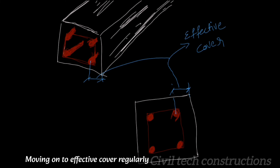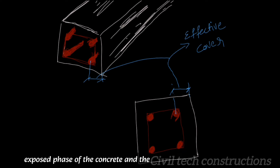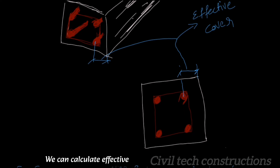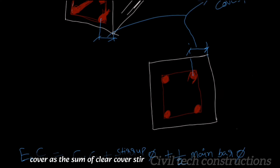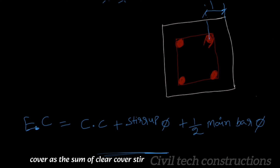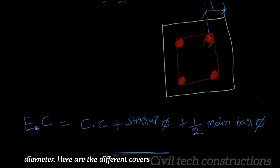Moving on to effective cover, regularly used in designs, it is the distance between the exposed face of the concrete and the centroid of the main reinforcement. We can calculate effective cover as the sum of clear cover, stirrup diameter, and half of the main bar diameter.